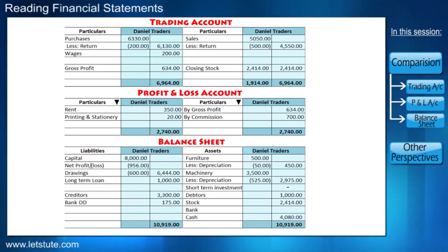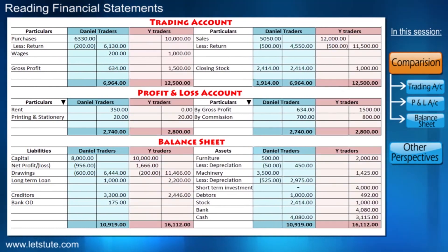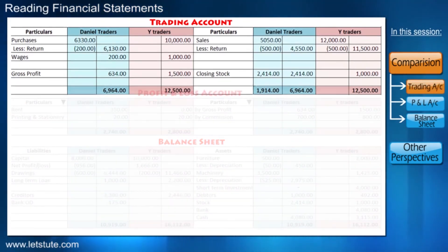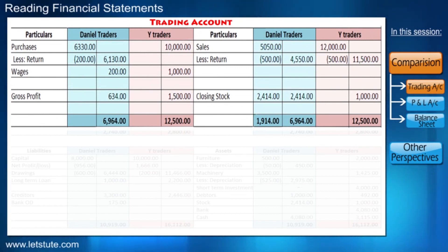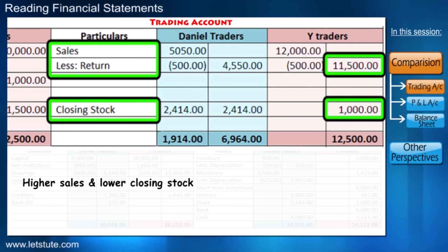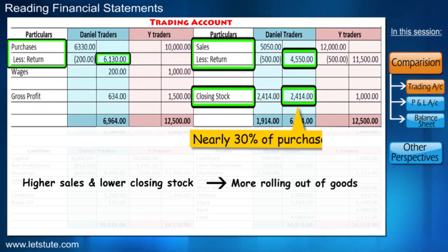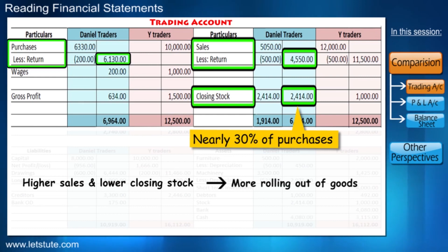We are going to compare Mr. Daniel's financial statements to that of Trader Y, who also operates in the same kind of business. Let's take a look at their trading accounts. We can see that Trader Y has higher sales yet they have lower goods kept in stock, which means they have rolled out more goods. Daniel has nearly 30 percent of his purchased goods still in stock. Being the first year of his business, it is okay, but he can try to roll out more sales in coming years.